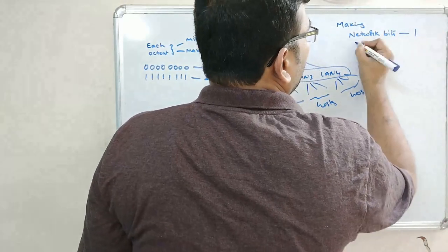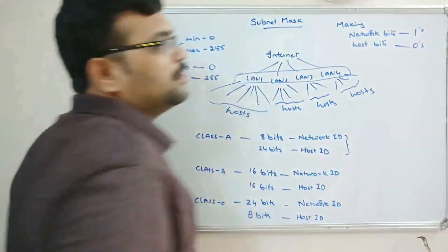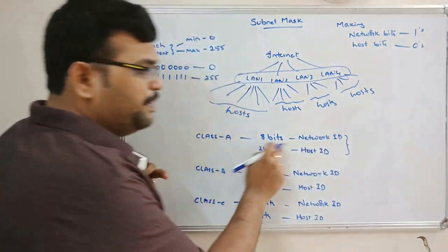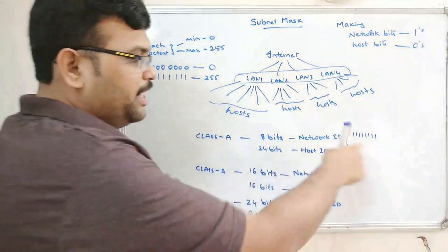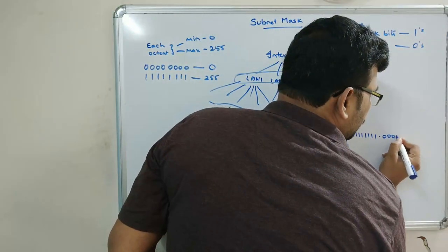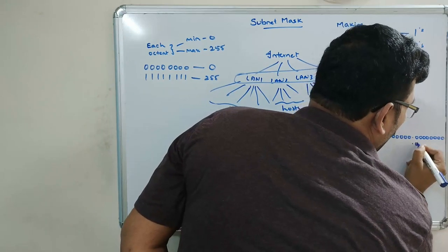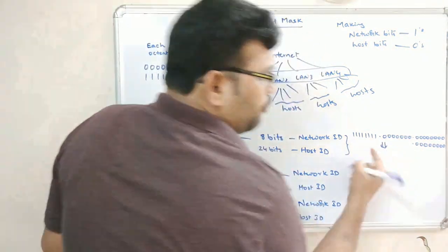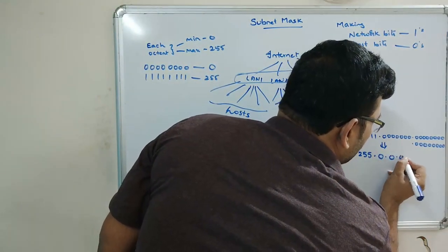To find the subnet mask, make the network bits 1 and the host bits 0. For class A, which has 8 bits for the network ID, the first octet will be all 1s and the remaining 24 bits will be all zeros.